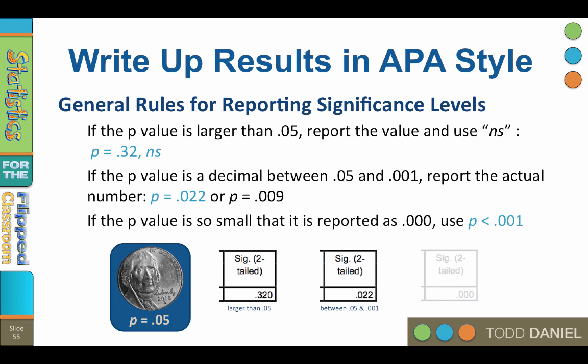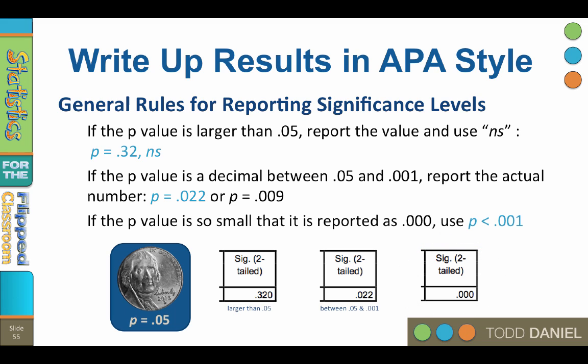If the p-value is so small that SPSS reports it as 0.000, write p less than 0.001. You should never write p equals 0.000 because there is no such thing as a true probability of 0 in statistics.